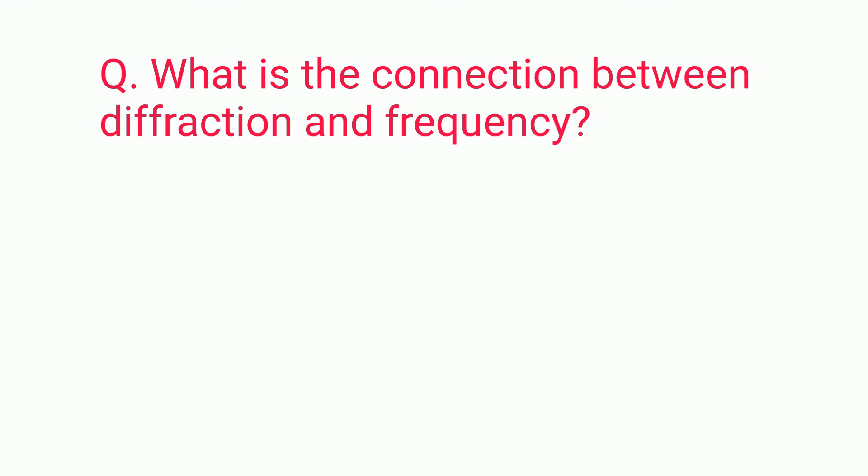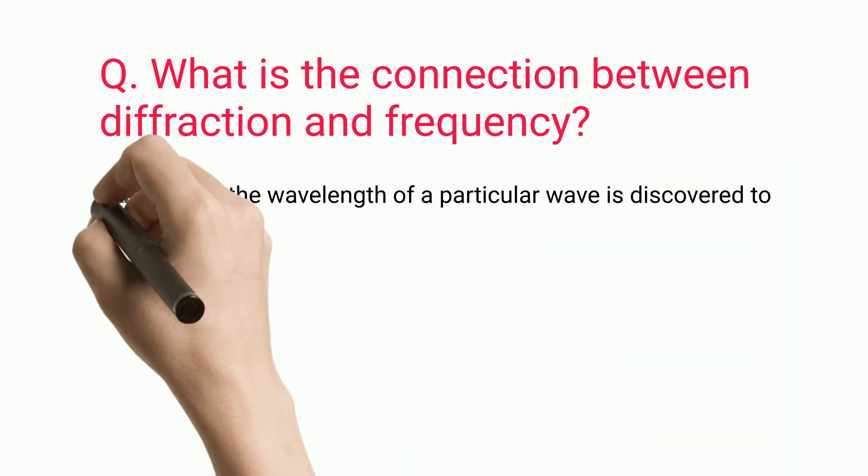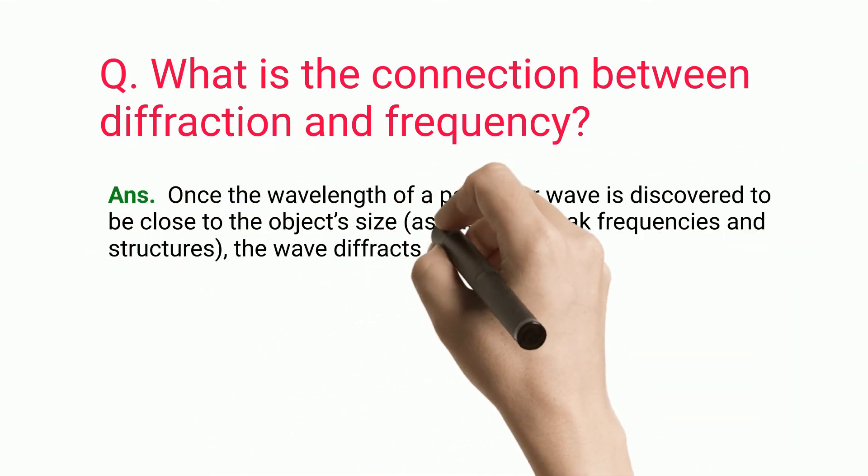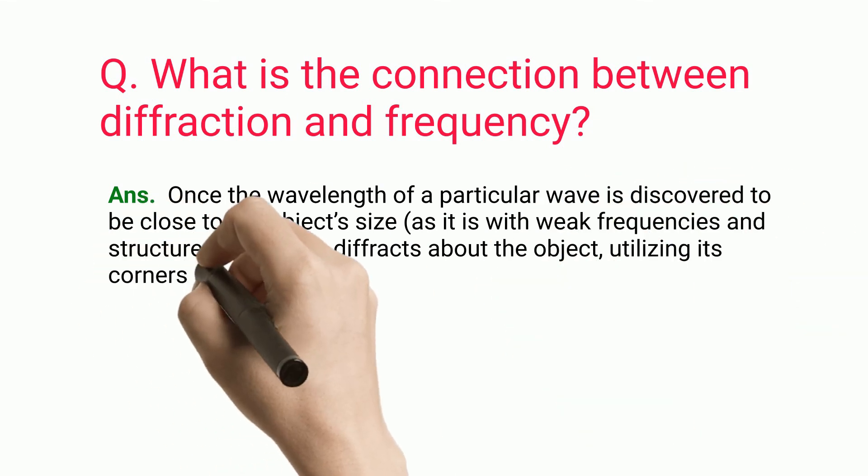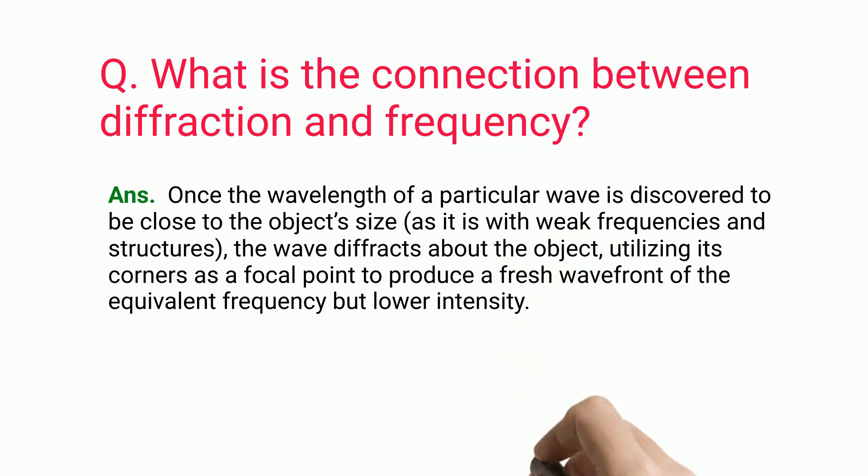Question: What is the connection between diffraction and frequency? Once the wavelength of a particular wave is discovered to be close to the object's size, as it is with weak frequencies and structures, the wave diffracts about the object, utilizing its corners as a focal point to produce a fresh wavefront of the equivalent frequency but lower intensity.